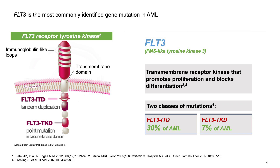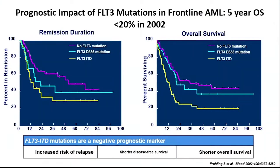FLT3 ITD negatively impacts the outcome of acute myeloid leukemia, and this was clear before targeted therapy. An early study from around 2002, in the intensive chemotherapy era without targeted therapy, showed that FLT3-mutated AML had shorter duration of remission compared to FLT3 wild-type AML, translating to shorter overall survival. FLT3 ITD negatively impacts AML outcome mainly by increasing relapse, with shorter disease-free survival and shorter overall survival.